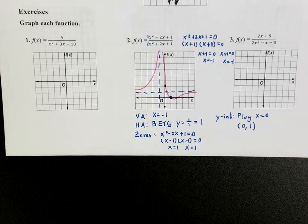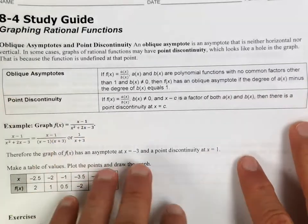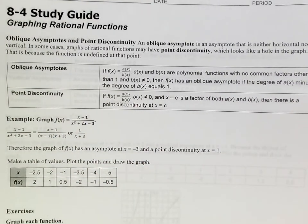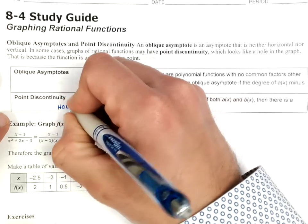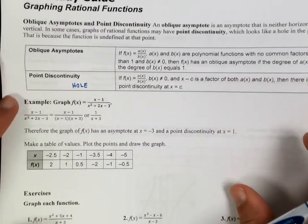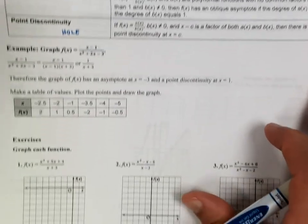Moving on to the second page — oblique asymptotes, which I normally call slanted asymptotes. Essentially, if the degree of the top is one degree higher than the bottom, then you're going to have slanted asymptotes, and I'll give you an example of that. And then point of discontinuity — that's what I normally call a hole. So when you hear me say 'hole,' that's what I'm talking about.